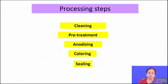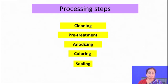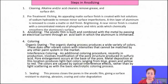The processing steps one should follow are: clean the surface properly, pretreat, perform the anodizing operation, coloring, and then sealing. Anodizing produces a surface with a lot of porosity. Surface porosities are usually removed by coloring or sealing operations so that there is no open porosity on the surface.